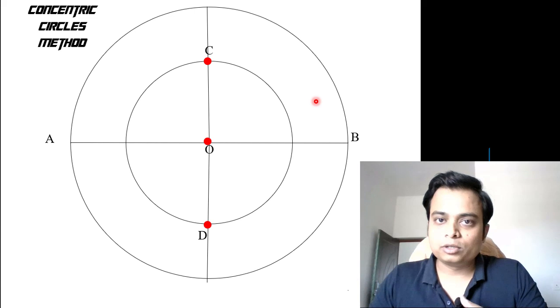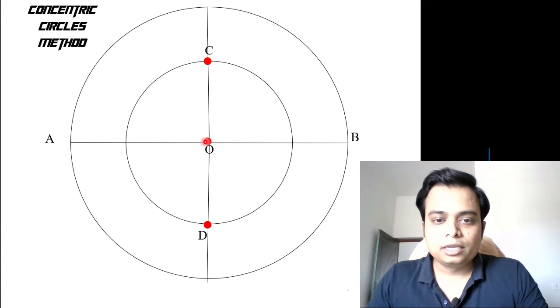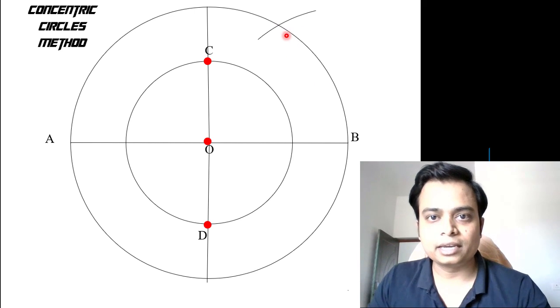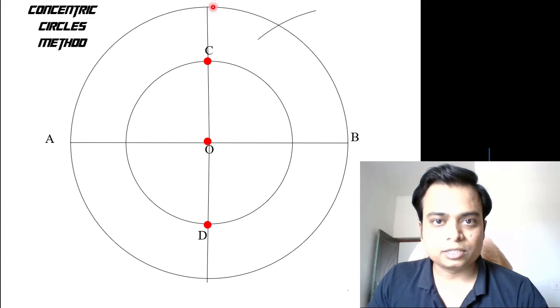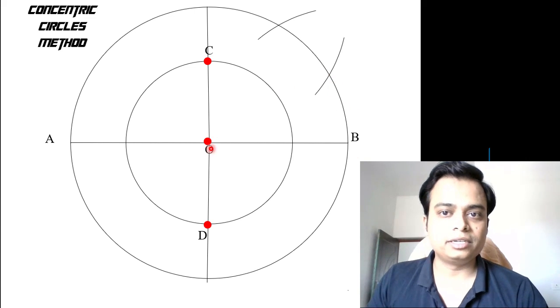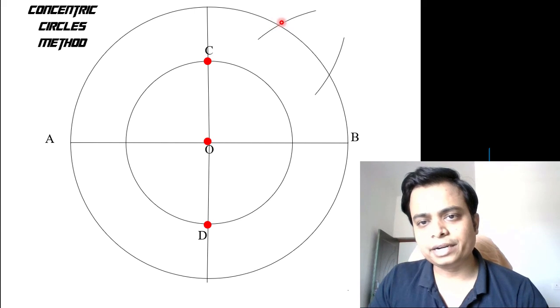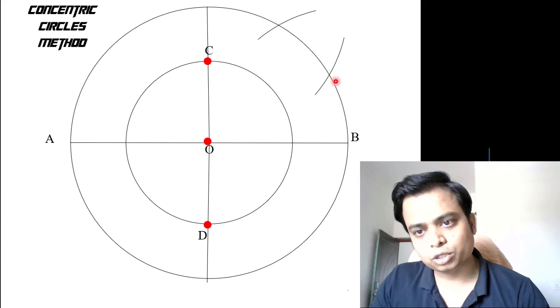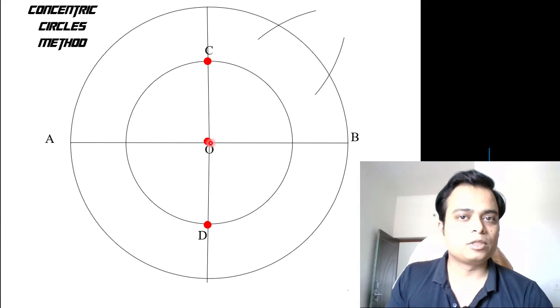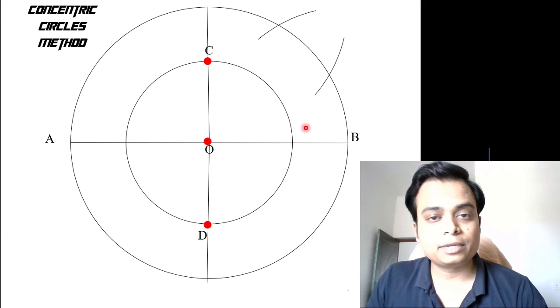You can do that with a simple protractor or use the construction approach. Keep one leg of the compass at O, the other at B, and then with that radius and B as the center, cut an arc. Then with this point as the center, cut an arc again. The angle subtended by this arc at O is 30 degrees. This is the trisection of a 90 degree angle, and this step has to be repeated over all the quarters.